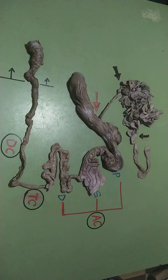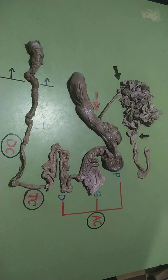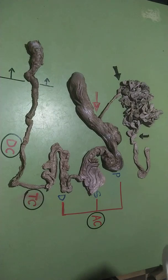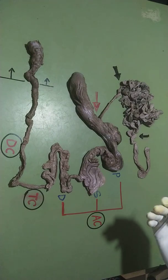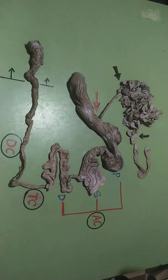In this present video today, we shall be looking at the intestines of the goat. Of course, we have these as a representative for other ruminant species, so what you have here can also give you a guide or hint for other ruminant species like cattle and sheep.